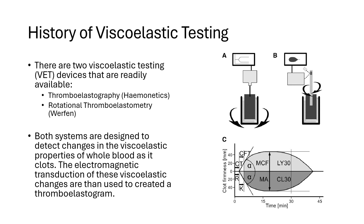The newer ROTEM device, ROTEM Sigma, still utilizes this rotating pin approach. However, the newer system for TEG, the TEG 6S, now exposes the whole blood to a fixed vibration frequency and measures the vertical motion of the blood's meniscus. This correlates with the viscoelastic properties of the blood as it clots. In both systems, the newer ones are automated systems.